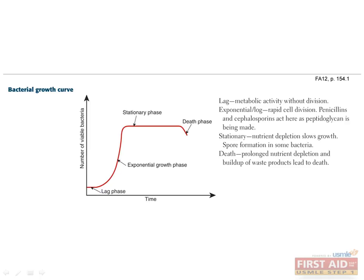Bacterial growth occurs in four phases. Lag phase: no division occurs while bacteria are busy gathering necessary growth requirements. Log phase: growth and rapid cell division occur here. Stationary phase: bacteria have run out of metabolites and toxic products begin to accumulate; bacteria stop growing and some will form spores. Death phase: bacteria succumb to toxic buildup and die.